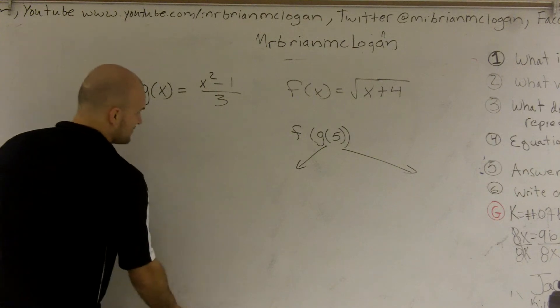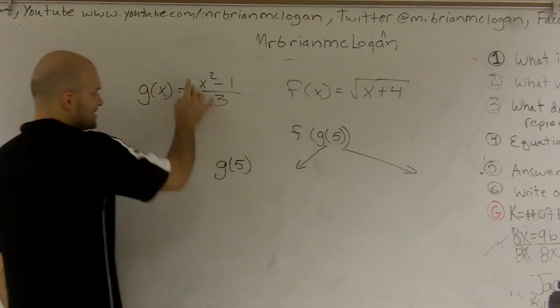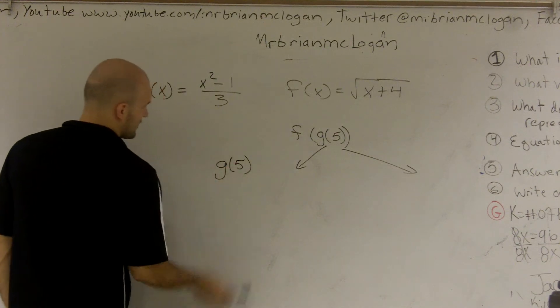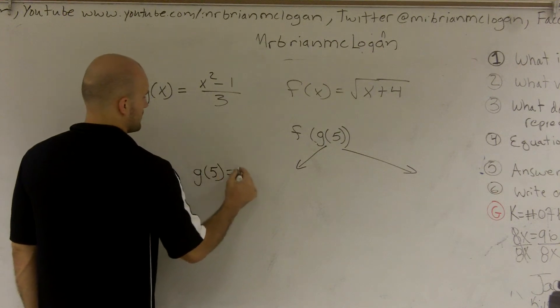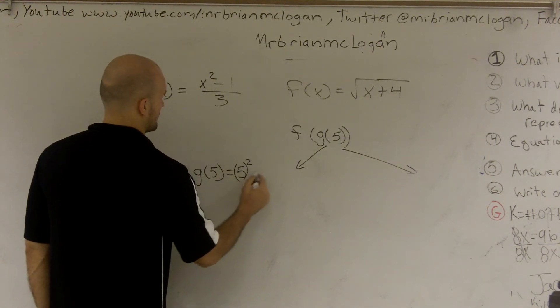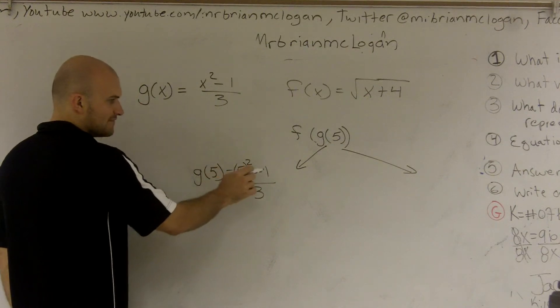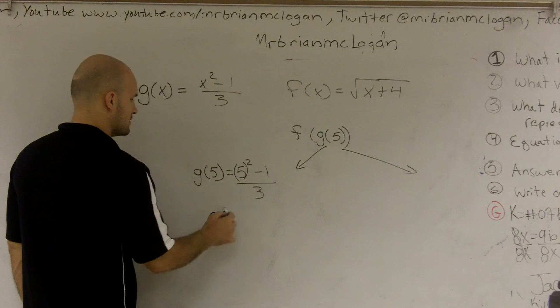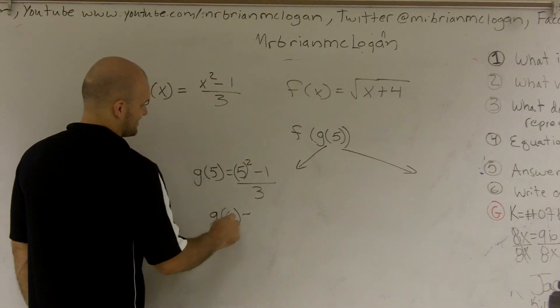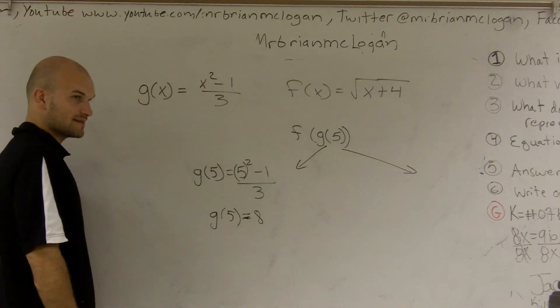So if I was going to find g of 5, that just means plug 5 in for x. 5 squared is 25. 25 minus 1 is 24. 24 divided by 3 is 8. Right? Does that make sense?